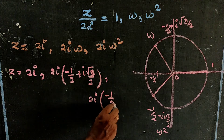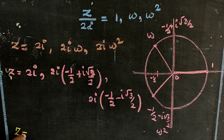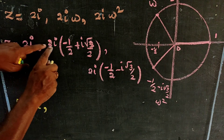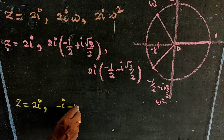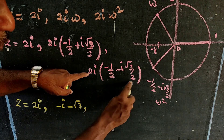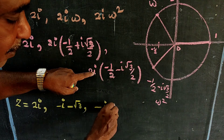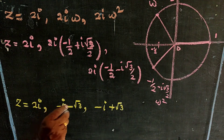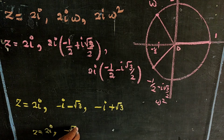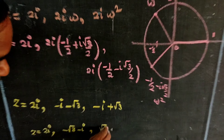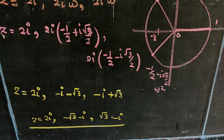Substituting omega: 2y into minus 1 by 2 plus i root 3 by 2. And for omega square: 2y into minus 1 by 2 minus i root 3 by 2. The final answers are Z equal to 2y, minus y plus i root 3, and minus y minus i root 3. This is the answer.